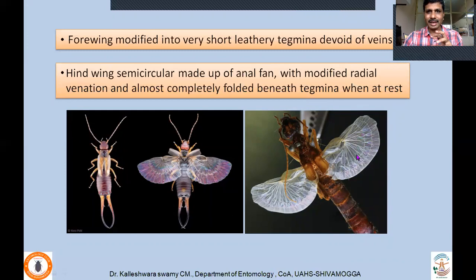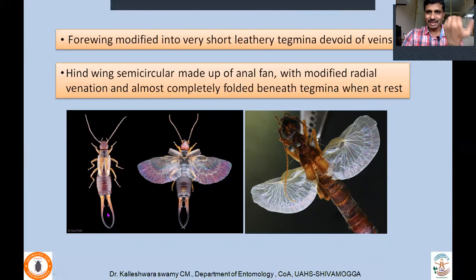Hindwings are almost completely folded beneath the tegmina when at rest. The earwigs use the forceps-like cerci to fold those large hindwings inside the forewings — that is how the mechanism works. It is a very interesting character. The forewings cover the hindwings at rest, and the cerci assist in folding the hindwings inside the forewings.